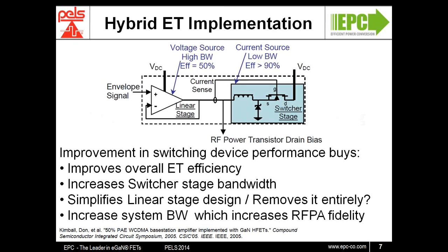So why eGaN-FETs for envelope tracking? Firstly, we need to consider the switching losses in the devices. For these kinds of applications, the devices will be hard switching in the multi-megahertz range. For a traditional hard switching transition, the switching losses are impacted by two device parameters: QGD, known as the Miller charge, and QGS2, which is the portion of the gate-source charge between the threshold voltage and the plateau voltage of the device. The turn-on period begins with an increase in gate voltage; when the gate voltage reaches the device threshold, the current through the device will begin to increase, driven by the gate current IG. During this current rising period, the device encounters both current and voltage, resulting in switching loss. The device parameter that determines the amount of loss during the current rising period is QGS2.